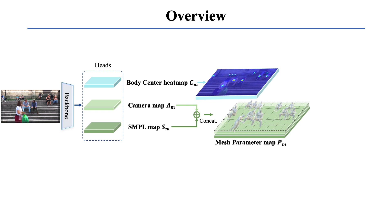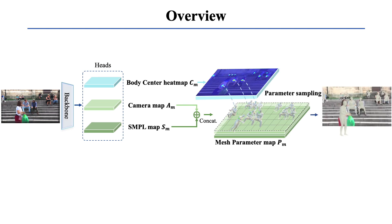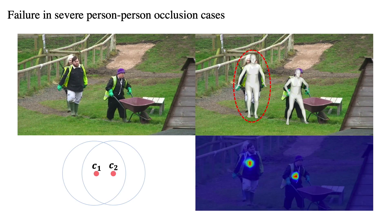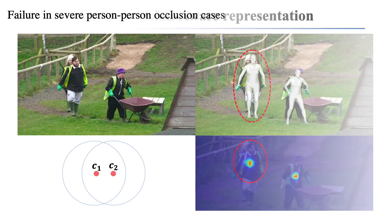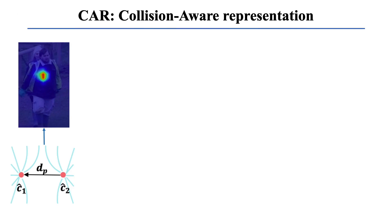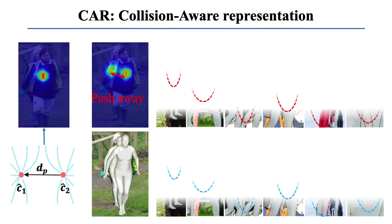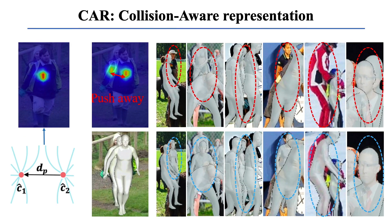During inference, we sample the parameter vectors at the body centers to get the final results. We observe that when two people are too close, their body centers are hard to distinguish from the body-center heatmap. To address this problem, we introduce a collision-aware representation named CAR. When two centers are close to each other, CAR has the effect of pushing them apart, helping the model effectively learn from cases with severe person-person occlusion.